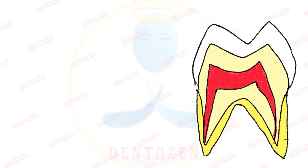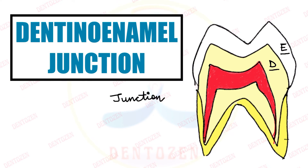Welcome back to Denizen. Today's video is about a junction — junction means a place where two things join. This is the junction present between enamel, which is the outermost layer of the tooth, and dentine, which is present below it. This is known as the dentino-enamel junction. Here we have drawn it as a straight line, but actually it is not a straight line.